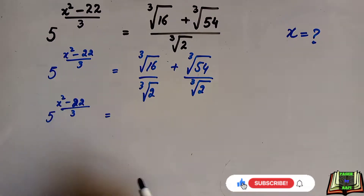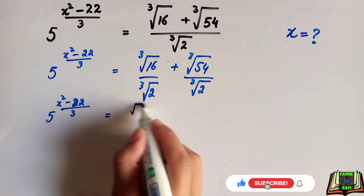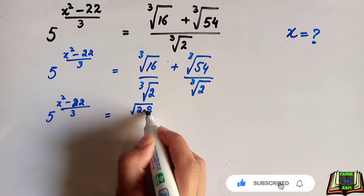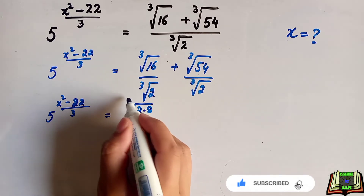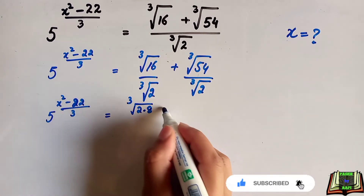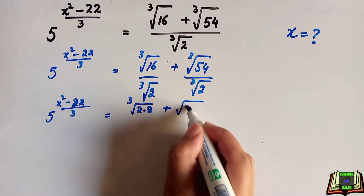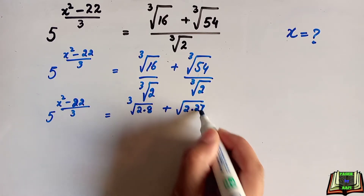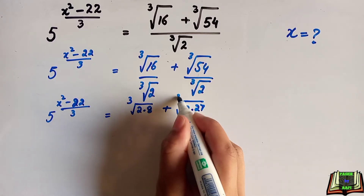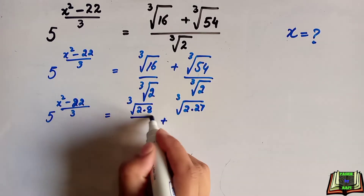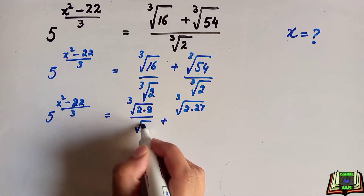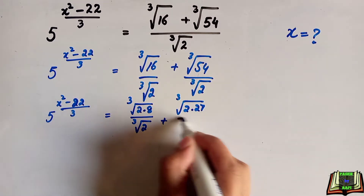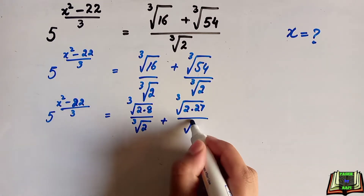In the next step, we write cube root of 16 as cube root of 2 into 8, and cube root of 54 as cube root of 2 into 27, all divided by cube root of 2.